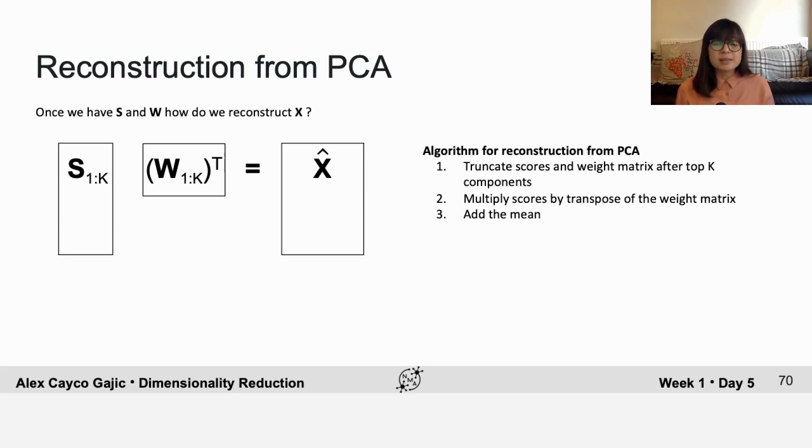And that gives you some estimate for the original data, and I'm going to call that estimate x hat. And you might want to know, how does that estimate compare to the best possible estimate that we could find based on a k dimensional basis?